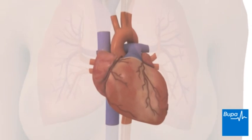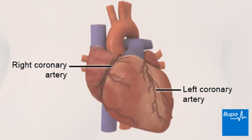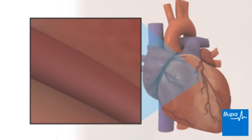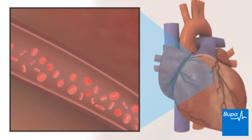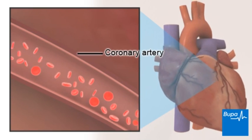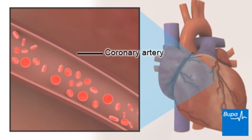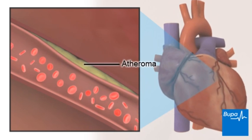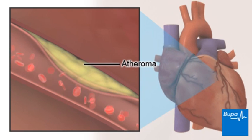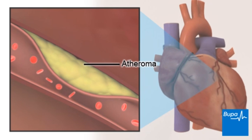The network of blood vessels that branch over the surface of the heart are the coronary arteries. The coronary arteries supply the heart with blood. Over time, fatty deposits can build up and form a plaque or atheroma on the artery lining. This can cause the arteries to narrow and prevent the heart from getting the blood and oxygen supplies it needs.